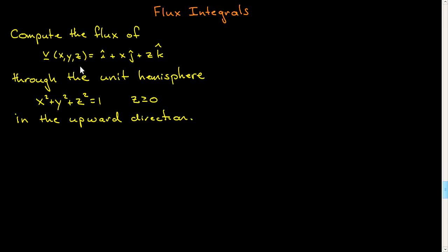You're asked to compute the flux of the following vector field, some specified vector field in three dimensions, through the unit hemisphere x squared plus y squared plus z squared equals 1, where z is positive, in the upward direction.